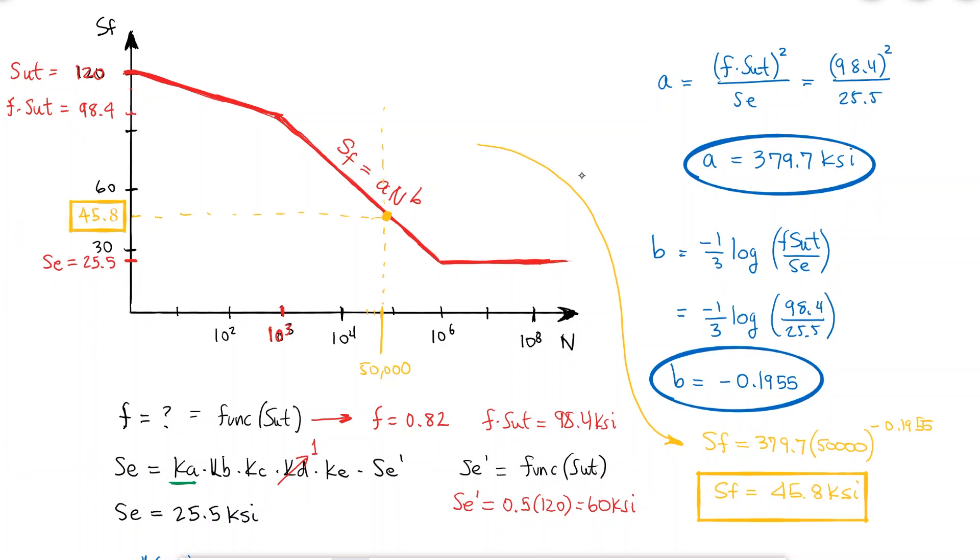Remember that this process is completely independent from calculating the stress of operation of the part. One thing is calculating the stress, and another one is calculating a reasonable endurance limit and a corresponding fatigue strength. The first one is one process you should be a master of, and should take no time or hesitation to complete accurately at this point. The second one, the one we did here today, is mostly procedural and therefore much more trivial.